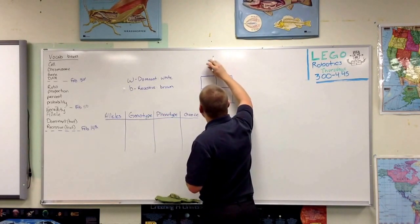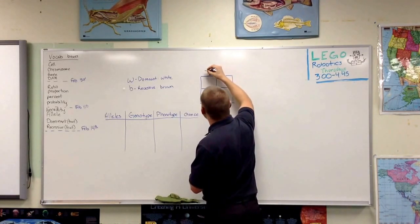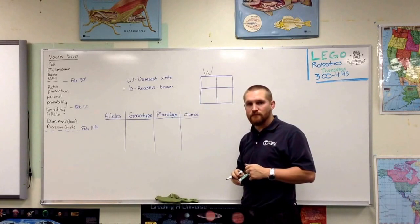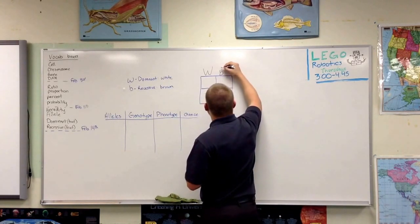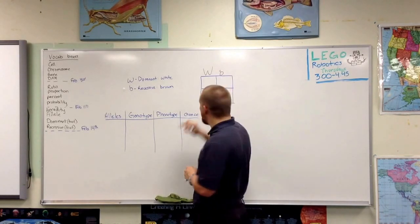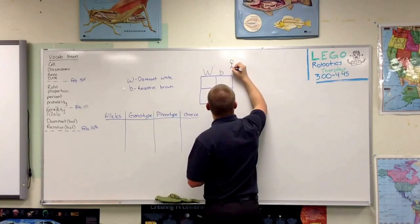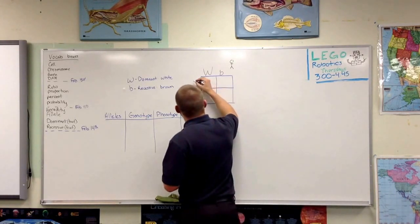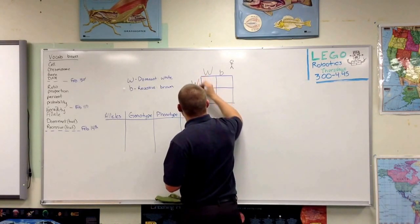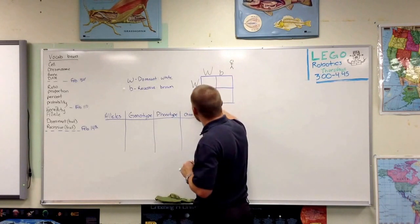Here's one parent — we'll call this dad — and we're going to say this parent has a dominant allele for white fur and a recessive allele for brown fur. Over here, one parent — this is mom — has an allele for white fur and a recessive allele for brown fur.